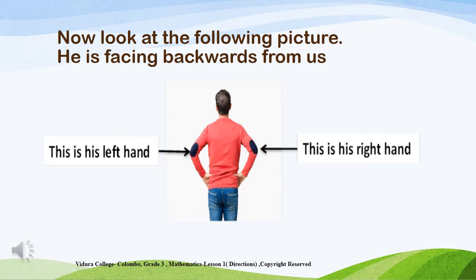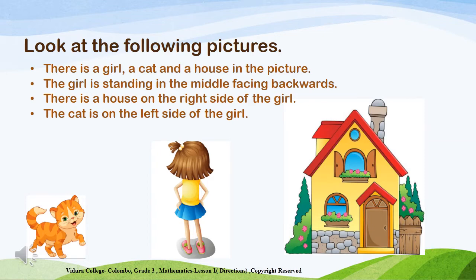Now children, can you see the boy in the picture? He is turning backwards to us. I have marked with arrows his left hand and his right hand. There is a cat, a girl and a house in the next picture. The girl is standing in the middle and she is turning backwards to us. You can see a house on the right side of the girl and the cat stands on the left side of the girl.